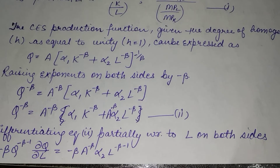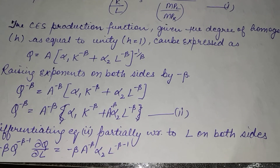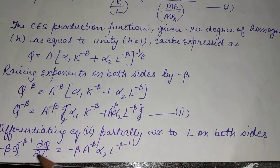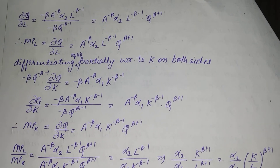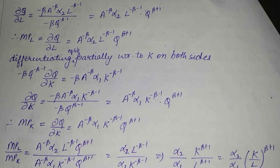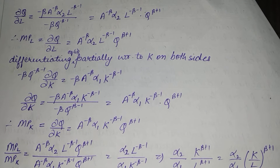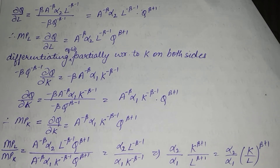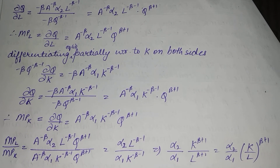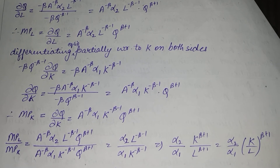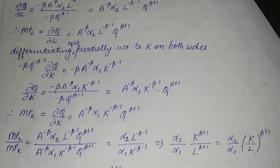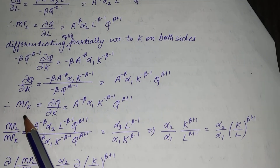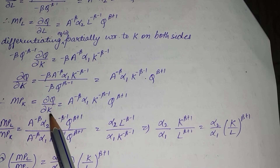Similarly, partially differentiating equation 2 with respect to K yields an analogous result. Taking the term multiplied with ∂Q/∂L to the other side so it gets divided — the −β terms cancel out, and Q^(−β−1) in the denominator moves to the numerator with a positive power, becoming Q^(β+1). Therefore, this entire expression for ∂Q/∂L is the marginal productivity of labor. Similarly, differentiating with respect to K gives us the marginal productivity of capital.